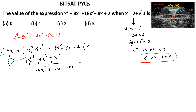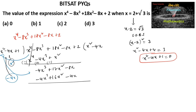Now we can see that minus 4x times x square gives minus 4x power 3, so we consider minus 4x. Multiplying minus 4x with x square minus 4x plus 1 gives minus 4x power 3 plus 16x square and minus 4x. By subtraction we get 1x square, and minus 8 plus 4 gives minus 4x, and then plus 2. Now again considering 1, multiplying 1 with x square minus 4x plus 1 gives x square minus 4x plus 1.